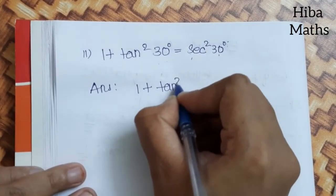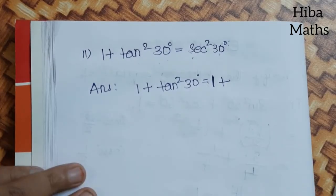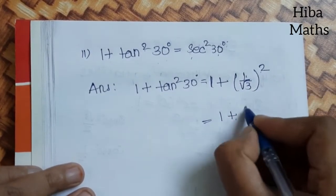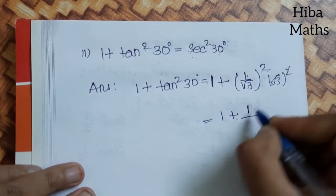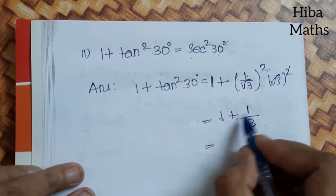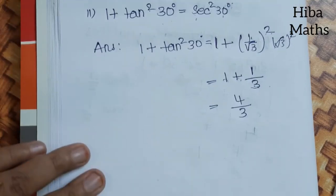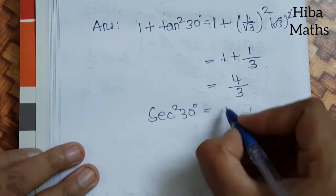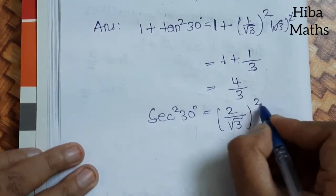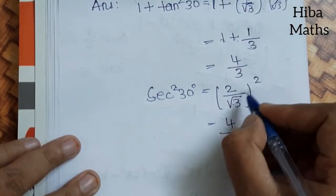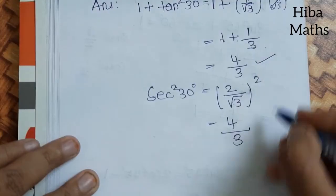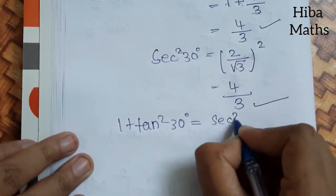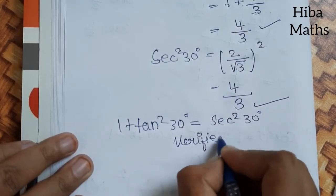1 + tan²30° = sec²30°. tan30° = 1/√3, so tan²30° = (1/√3)² = 1/3. Then 1 + 1/3 = 4/3. For sec²30°: sec30° = 2/√3, so sec²30° = (2/√3)² = 4/3. Here is 4/3 and here is 4/3, so 1 + tan²30° = sec²30°. Answer is 4/3.